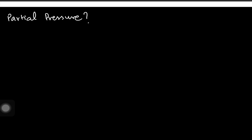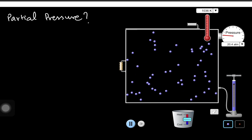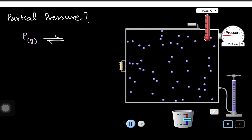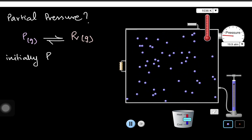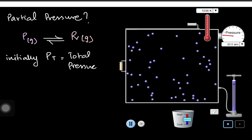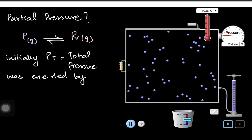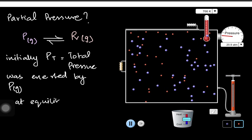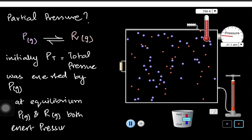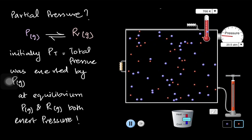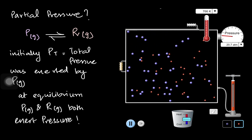Before we talk about Kp, we should know what partial pressure is. When gases are in a container, we are more interested in their pressures rather than concentrations. Imagine a purple colored gas which reaches equilibrium — initially only the purple reactant is present, and the red colored product is not there. The total pressure was exerted entirely by the purple reactant gas.